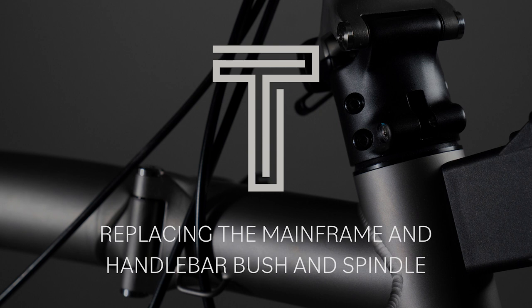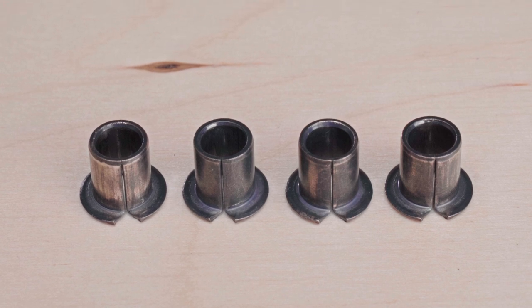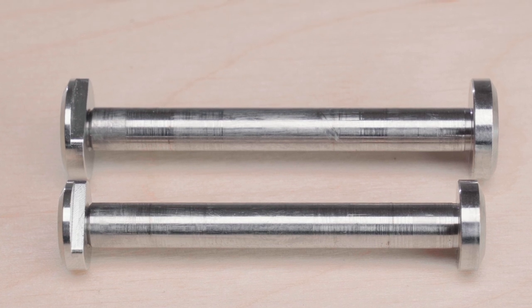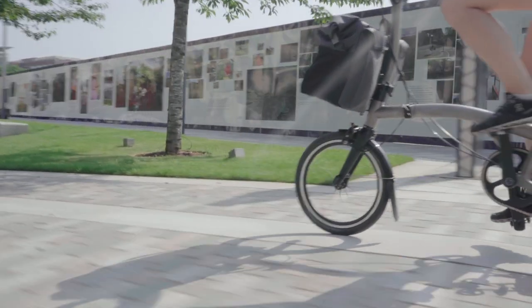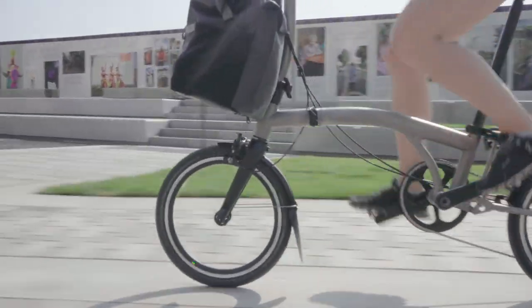Replacing the mainframe and handlebar bush and spindle. The bushes in the hinge will need replacing over time. These and the spindle are wearing items. How quickly it will need replacing will depend on use. Signs you have worn bushings is indicated by radial movement in the hinge.